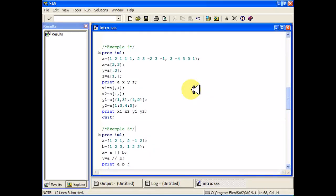Here are a few more commands in the IML procedure. So suppose I have a matrix here, A, that has these values: 1, 2, 1, 1, 1, 2, 3, minus 2, 3, minus 1, and so on.